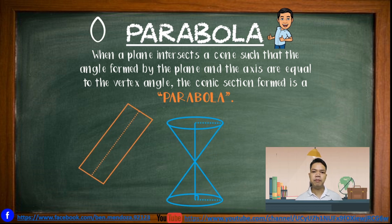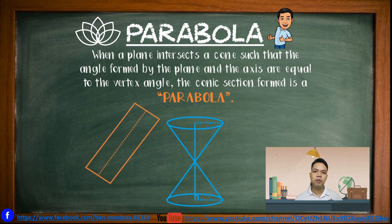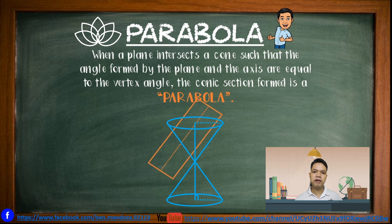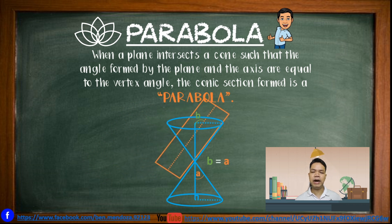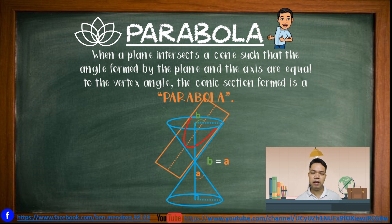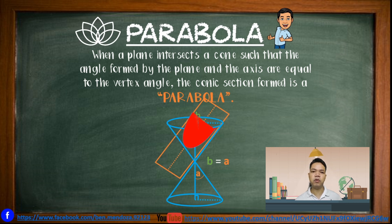A parabola. When a plane intersects a cone in such a way that the angle formed by the plane and the axis is equal to the vertex angle, the conic section formed is what you call a parabola.